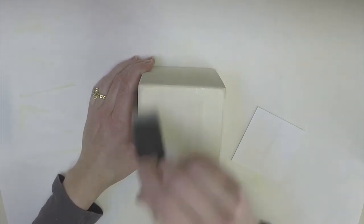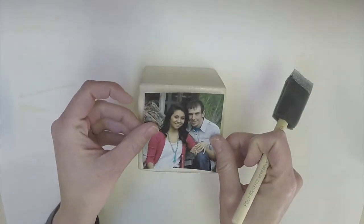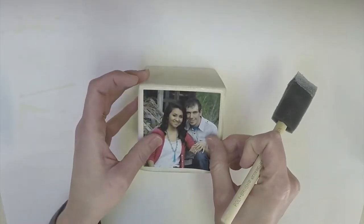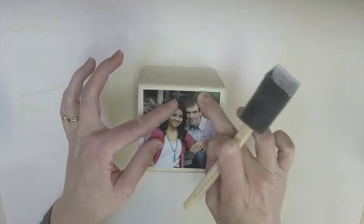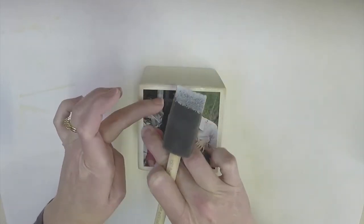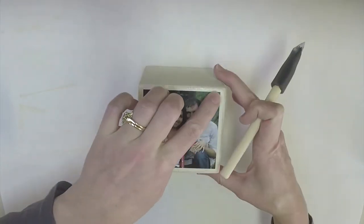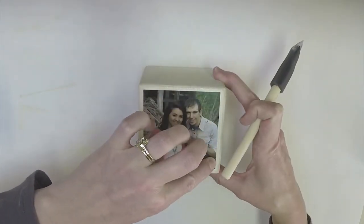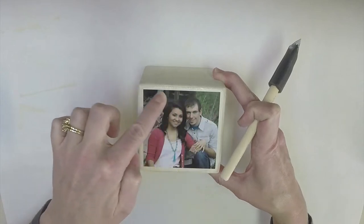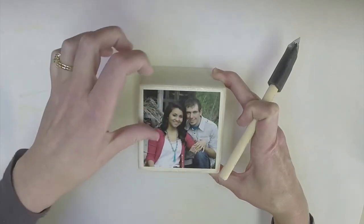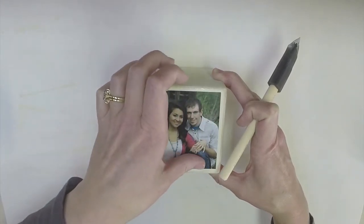Once I have my layer of Mod Podge I'm going to place my photo in the center of the block and you want to make sure that there are no air bubbles underneath the photograph. So you want to make sure that all of it, the middle, the edges, everything is secure on the block or you will end up with a big bubble underneath and you'll be unhappy with your project.